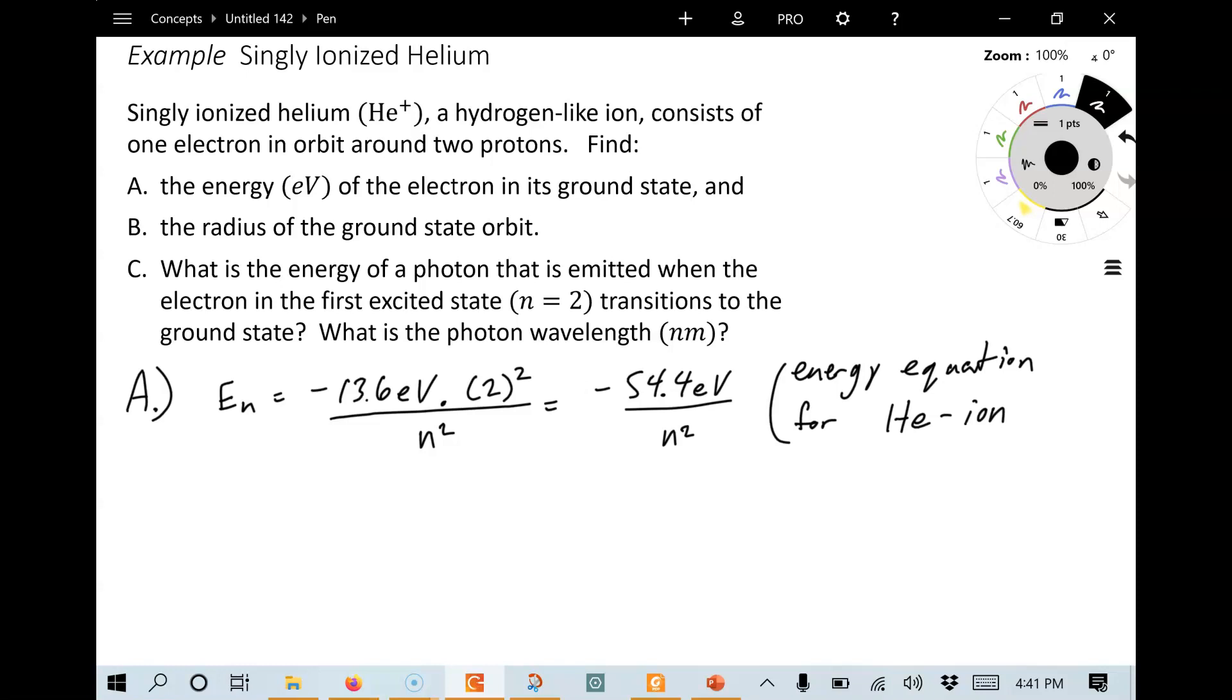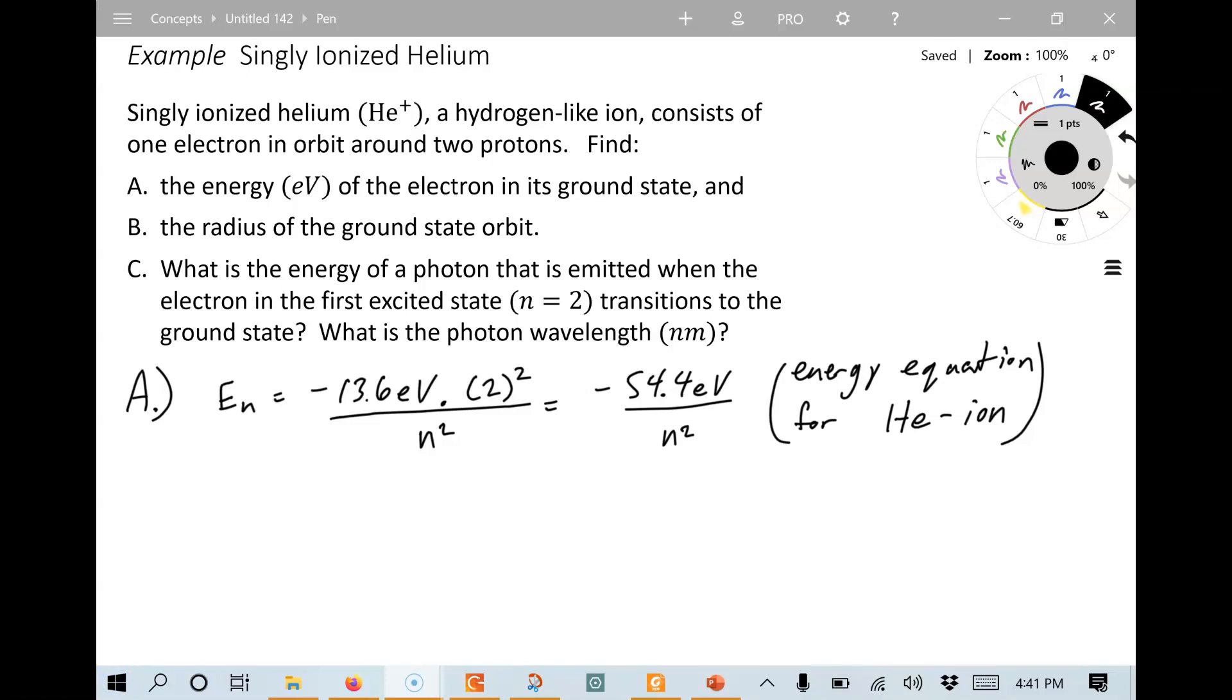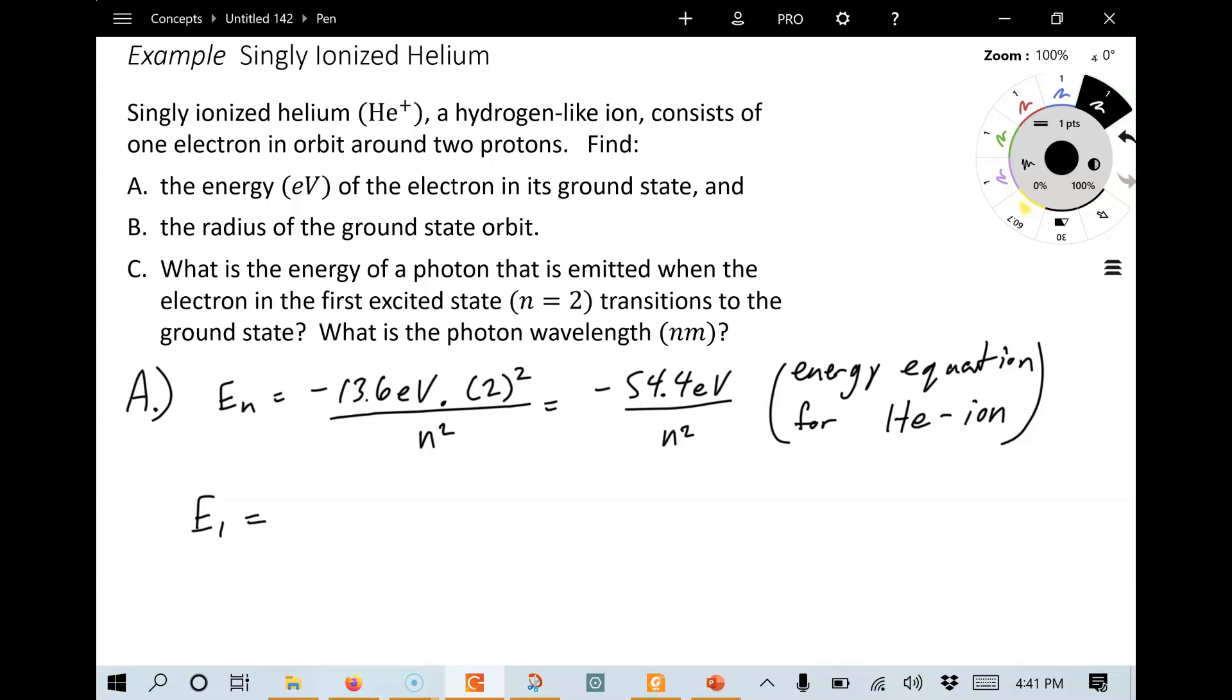Now, part A asks us, what is the ground state energy? Well, that's just E1, and when we put a 1 in for n, of course, we just get minus 54.4 eV. There's your ground state energy.